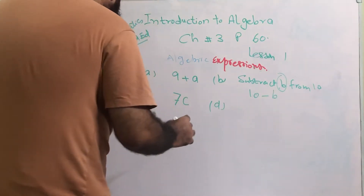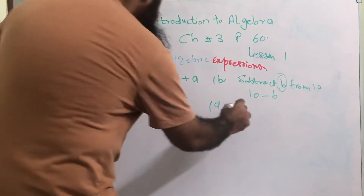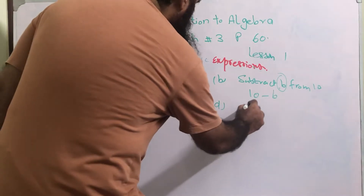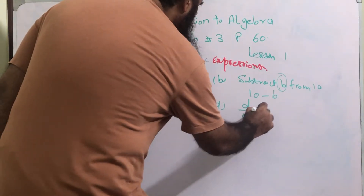Part d is: divide d by 8. We have to divide d by 8, so the answer is d over 8.